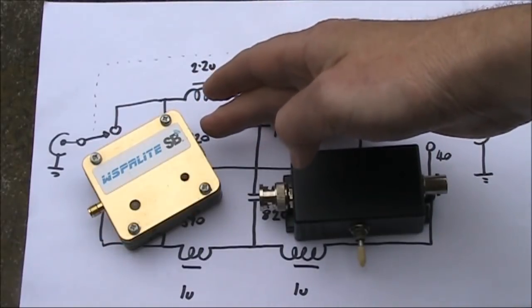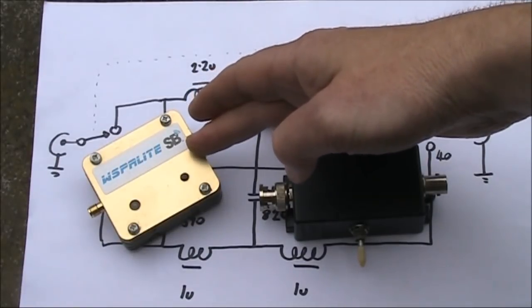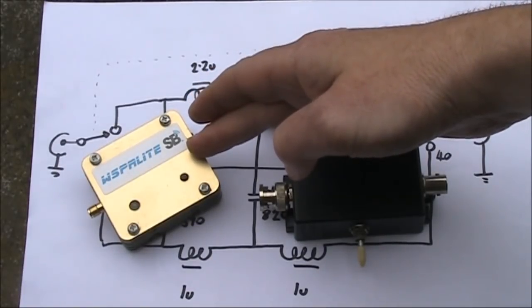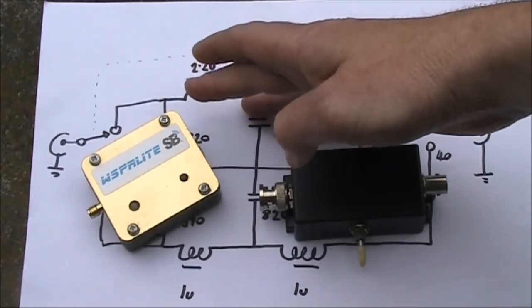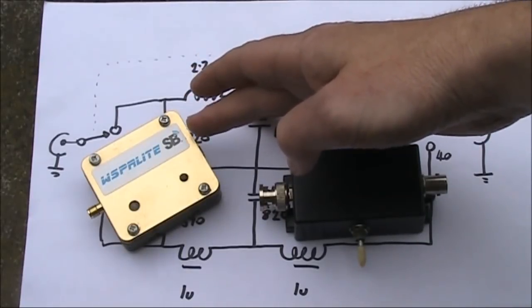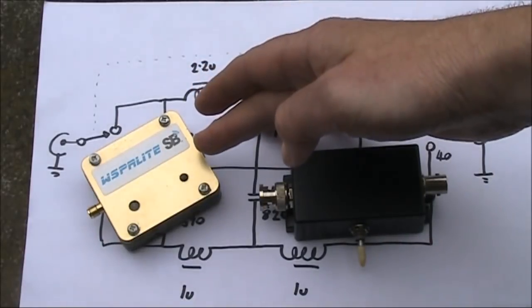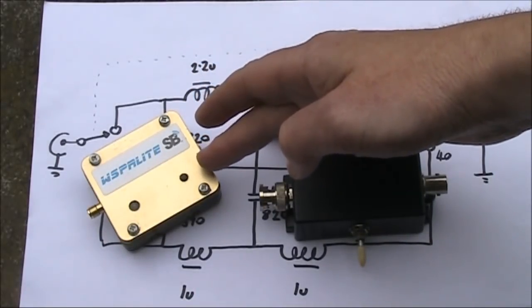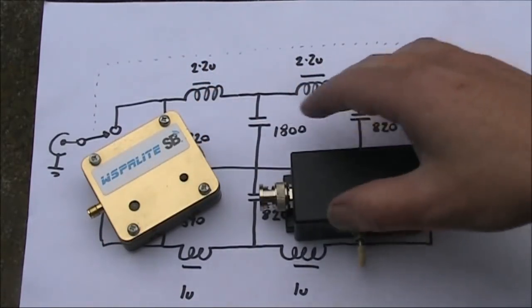It's a particularly good companion to the Whisperlite Classic from SodaBeams, because it has filters suitable for 10 and 14MHz, but not for lower bands. So, if you do want to use this on 80 and 40m, then you will need a filter like this.